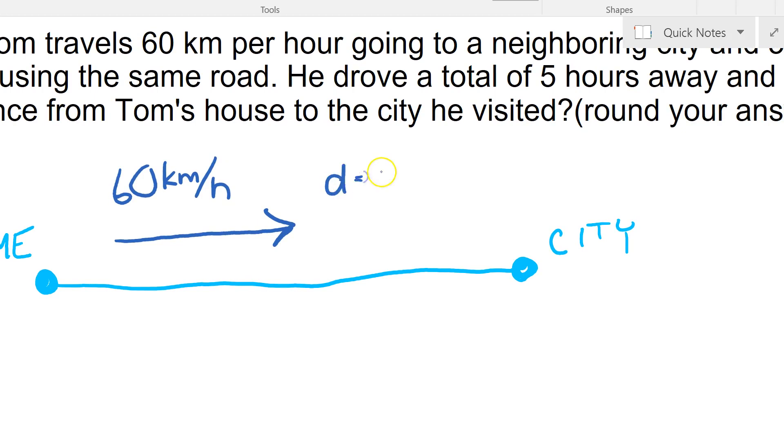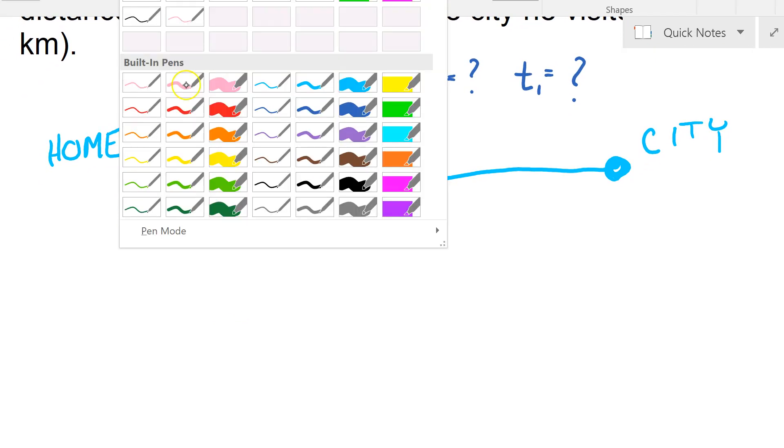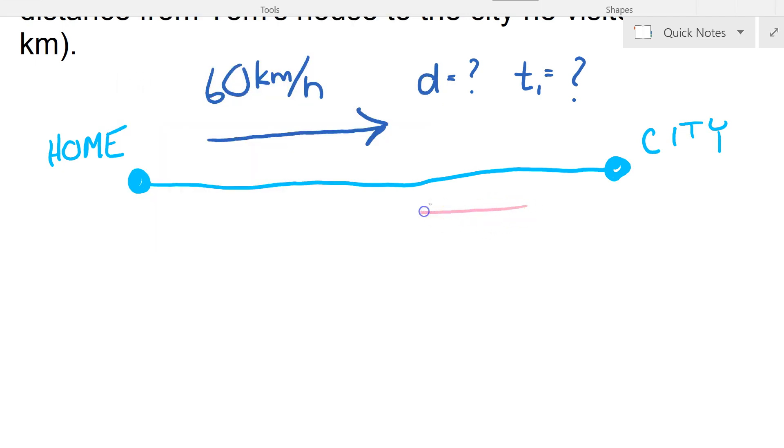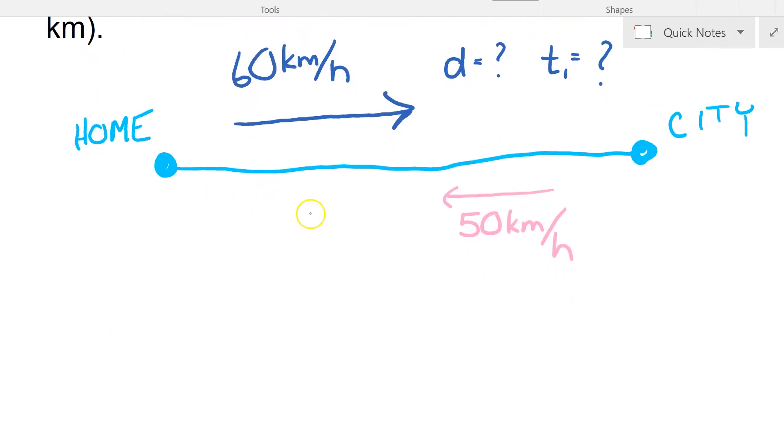The distance, well we don't know what that is, and a time which is time one, we don't know what that is. Now when he comes back, let's get a different color here, let's do pink. When he comes back he's gonna travel 50 kilometers per hour. Again the distance I don't know what it is. But the beautiful piece here is that this distance here and this distance here are going to be equal because we're traveling from home to the city and the city back. And then our second time is, I don't know, call it t sub 2.